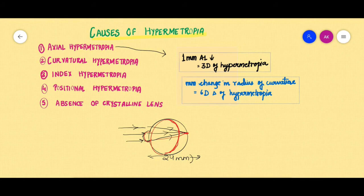And one rule that we must remember is the rule of 1, 2, 3 for the axial length. That is, 1 mm decrease in the axial length from 24 millimeters will give rise to about 3 diopters of hypermetropia.